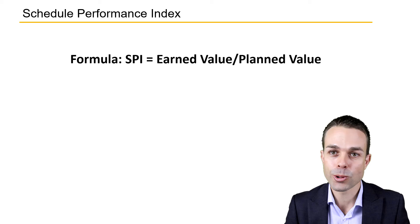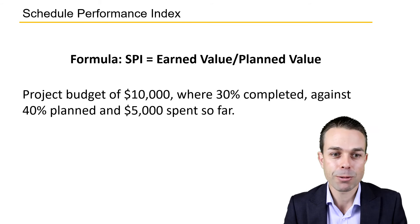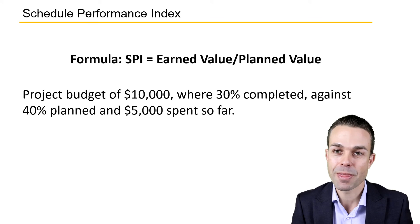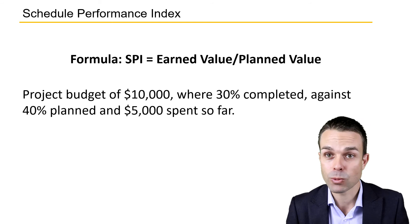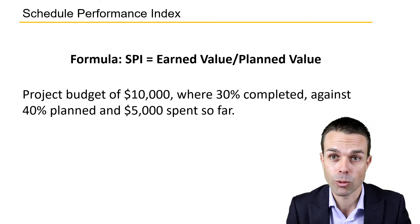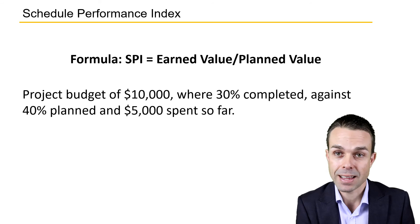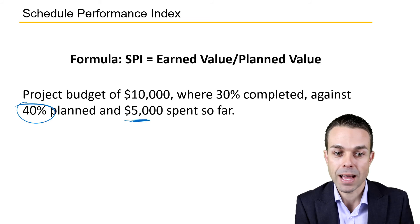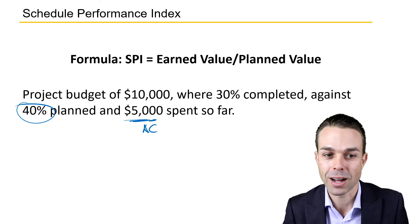Let's look at an example project. Let's say we've got a project budget — a Budget at Completion, or BAC — of $10,000. We're 30% completed in delivering this product, but we had planned to be 40% completed at this stage. Our Actual Cost so far is $5,000.